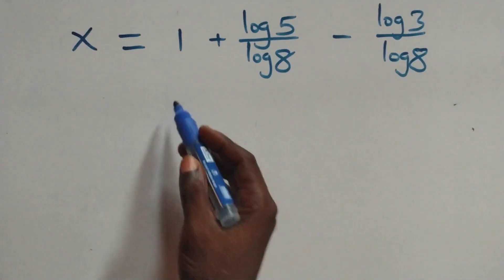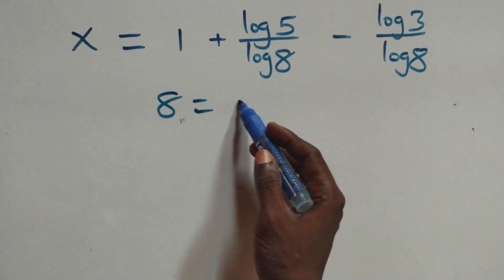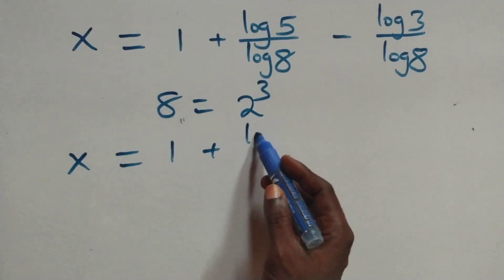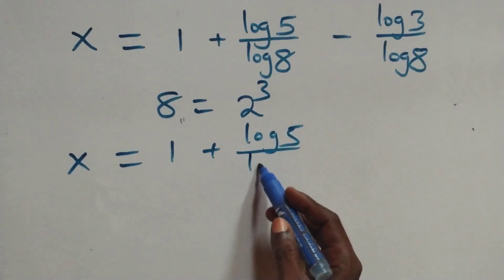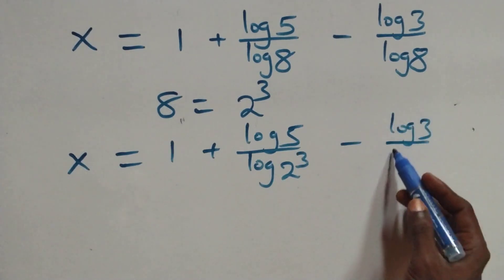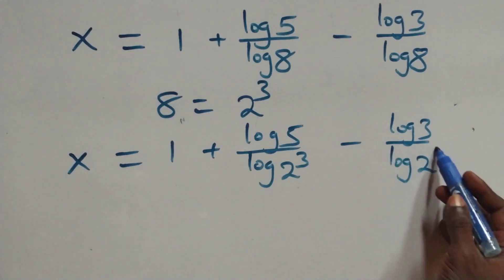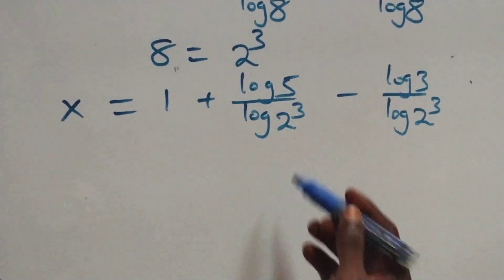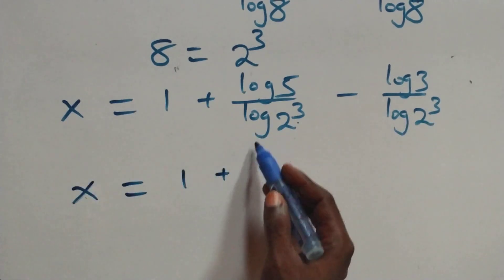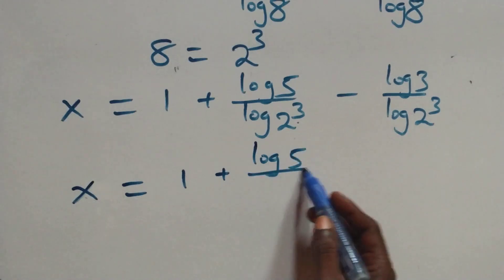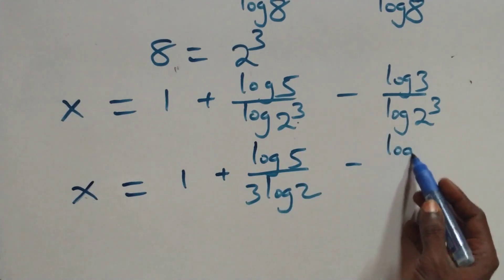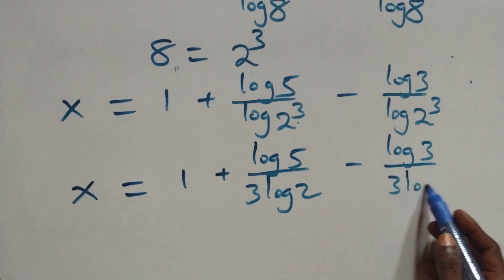Next step here: we can express 8 as 2 cubed. So we have x equals to 1 plus log 5 over log 2 cubed, minus log 3 over log 2 cubed. Then here we apply the power of log rule to bring 3 out, and we have x equals to 1 plus log 5 over 3 log 2, minus log 3 over 3 log 2.